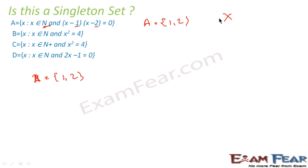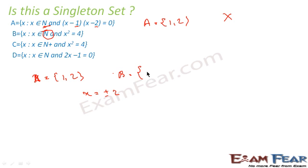For a singleton set, there should be only one element. Now let us take the second example — set B, where x is a natural number and x² = 4. So x = ±2. But since B contains only natural numbers, we ignore −2 and keep only +2. So B = {2}, which has only one element, making B a singleton set.